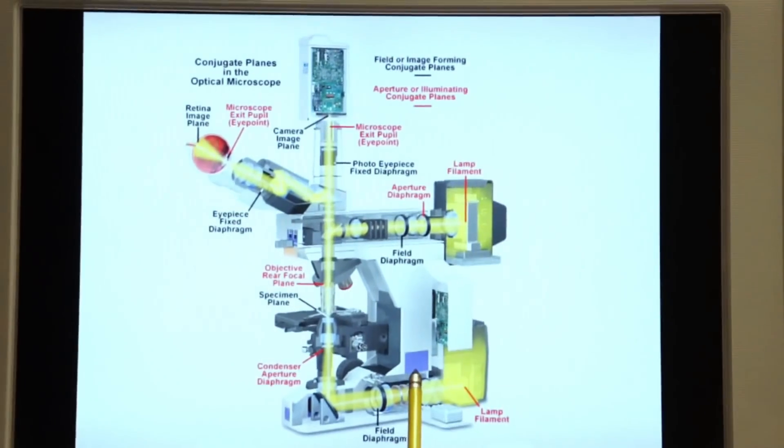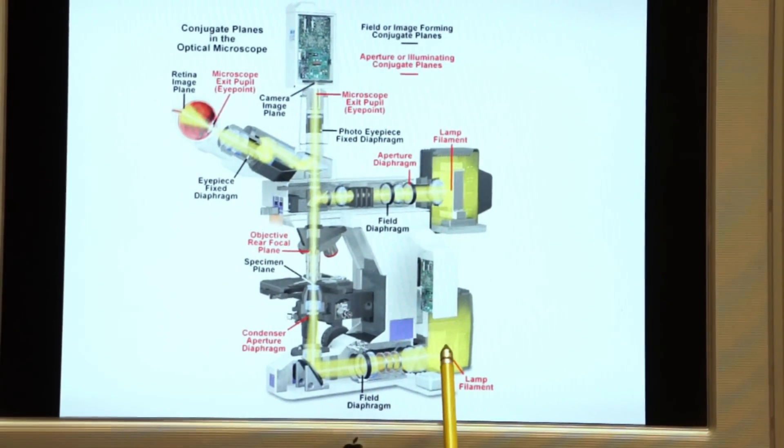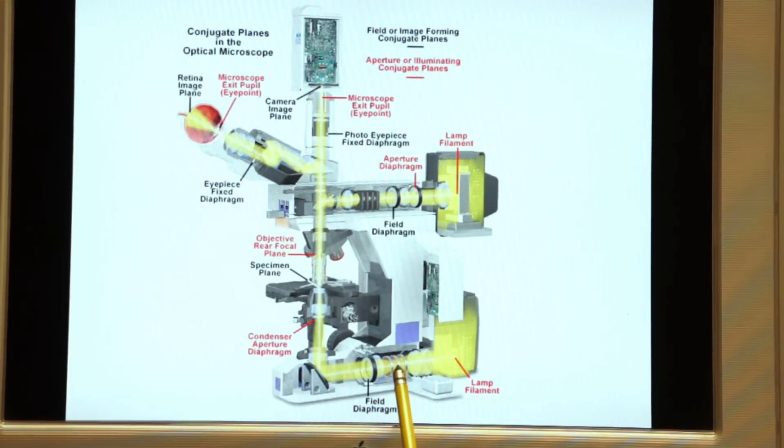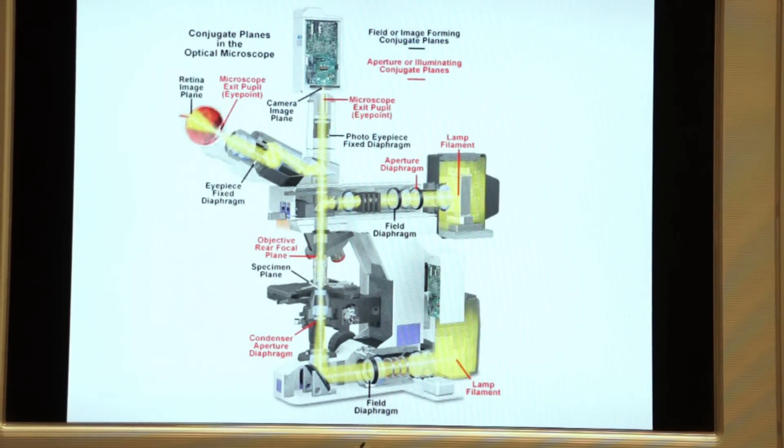Here you see the compound microscope with the transmitted light illuminator. We have a tungsten halogen bulb in the transmitted light illuminator that sends light through the base of the microscope. Here you see it traveling through the field diaphragm.